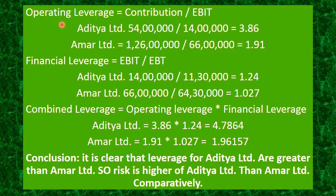First is operating leverage. Formula of operating leverage is contribution upon EBIT. For Aditya Limited, it is 54 lakhs upon 14 lakhs, which gives 3.86. For Amar Limited, it is 1 crore 26 lakhs upon 66 lakhs, which comes to 1.91. So operating leverage for Aditya Limited is 3.86 and for Amar Limited is 1.91.